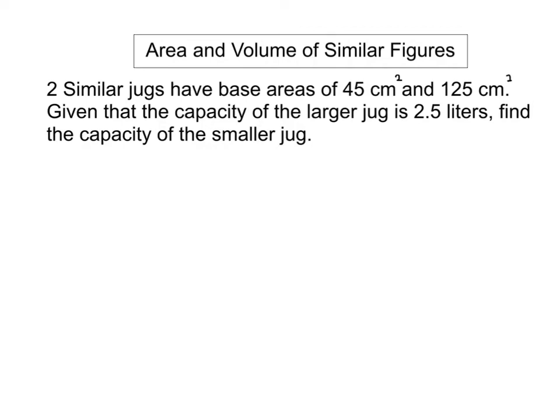In this question, we are told that two similar jugs have base areas of 45 cm² and 125 cm². Given that the capacity of the larger jug is 2.5 liters, find the capacity of the smaller jug.